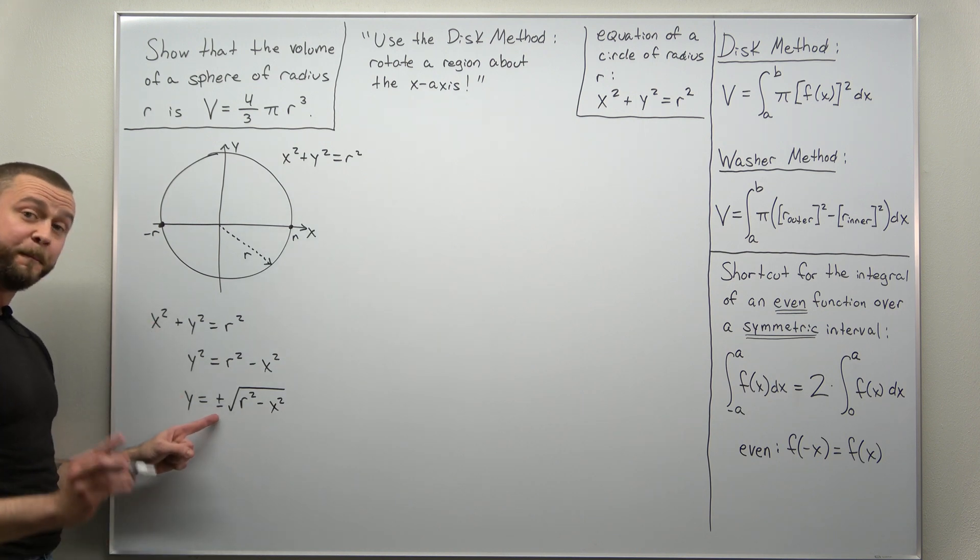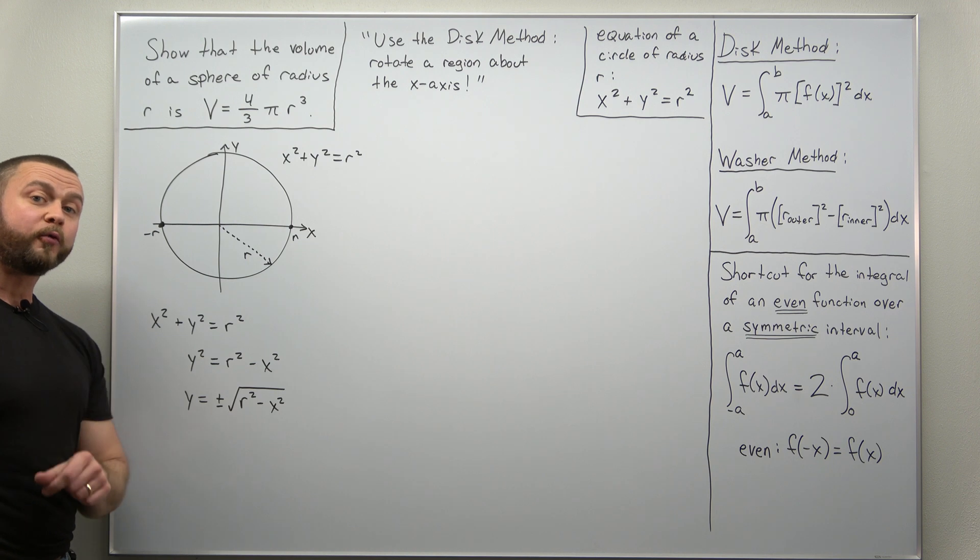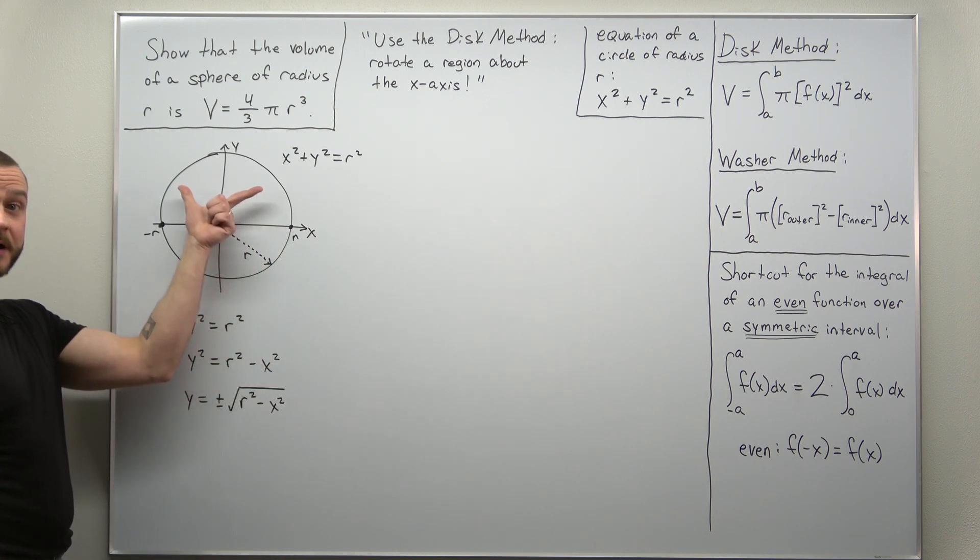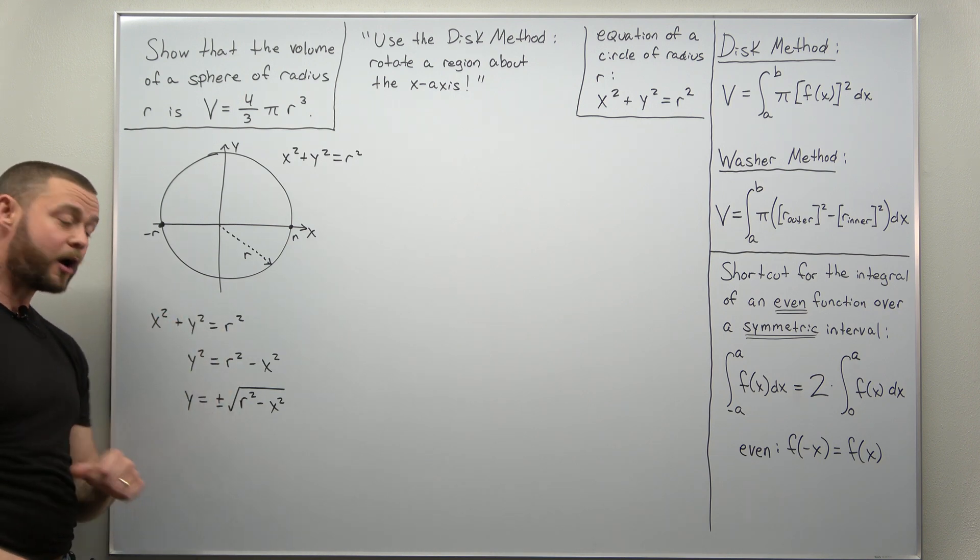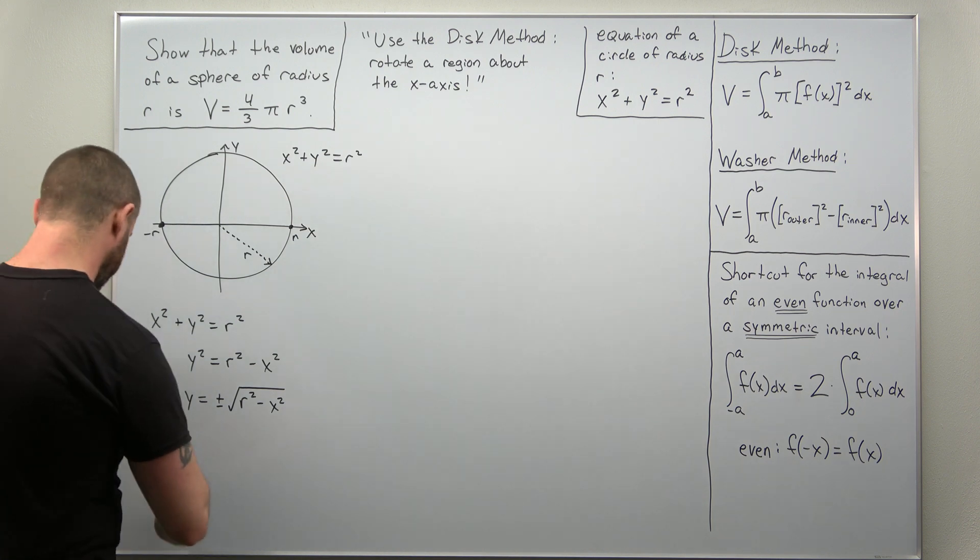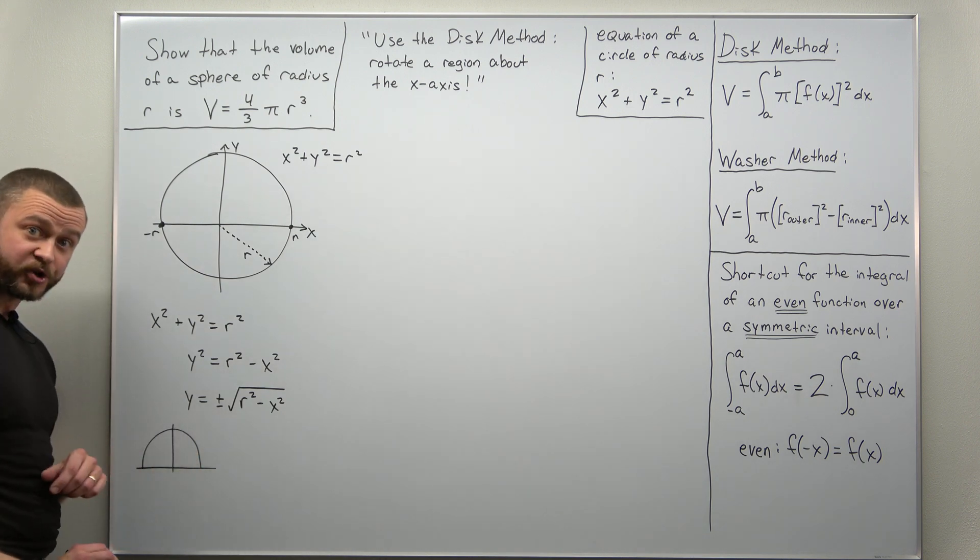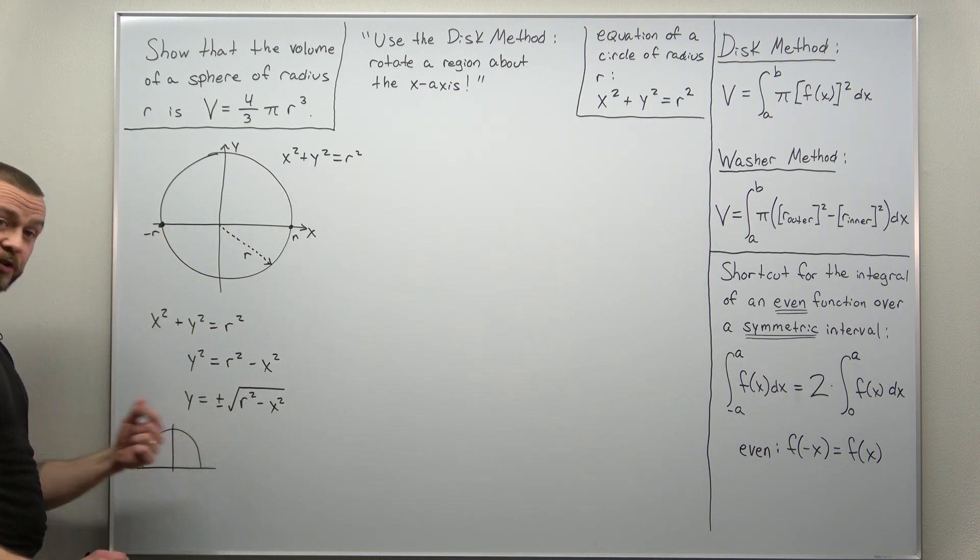All right, now we don't want both of the signs here, the positive and the negative. We're rotating a region about the x-axis so it's going to be enough for us to take the upper half and just rotate that about the x-axis. The upper half corresponds to the positive root.